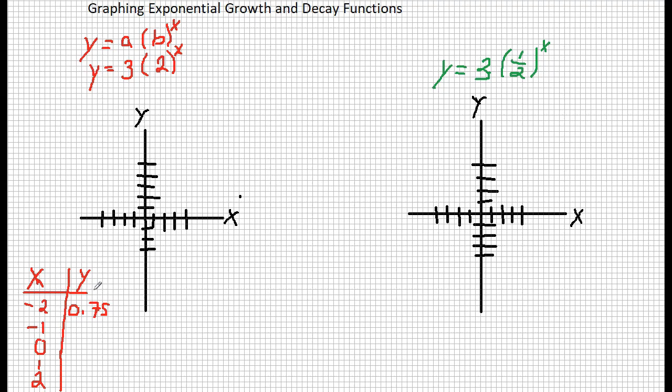Now what if I plugged in negative one? 2 to the negative 1 power is 1 half. 1 half times 3 is 3 halves, which makes 1 and a half.